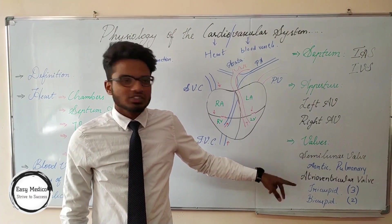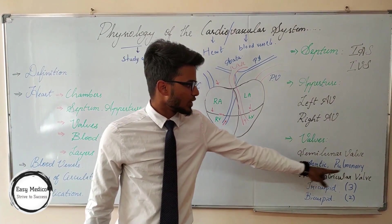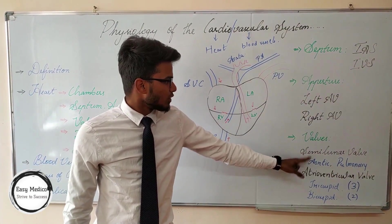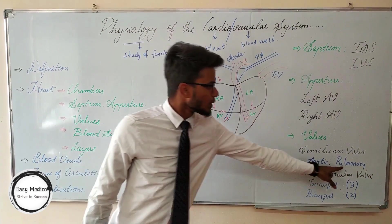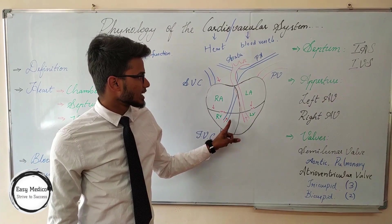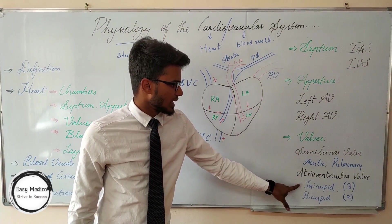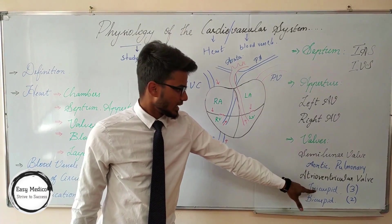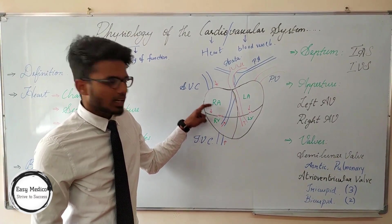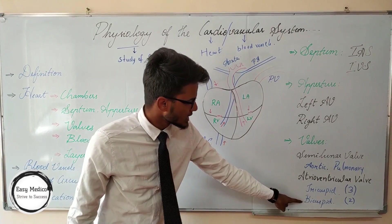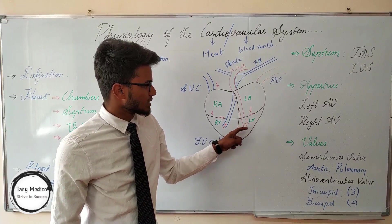Coming to the Walls, there are two types: Semilunar Walls and Atrioventricular Walls. Semilunar Walls contain the Aortic Valve and the Pulmonary Valve. The Aortic Valve is situated between the left ventricle and the systemic aorta. The Pulmonary Valve is located between the right ventricle and the pulmonary artery. Atrioventricular Walls include the Tricuspid and Bicuspid valves. The Tricuspid is located between the right atrium and the right ventricle. The Bicuspid, also known as the mitral valve, is located between the left atrium and the left ventricle.